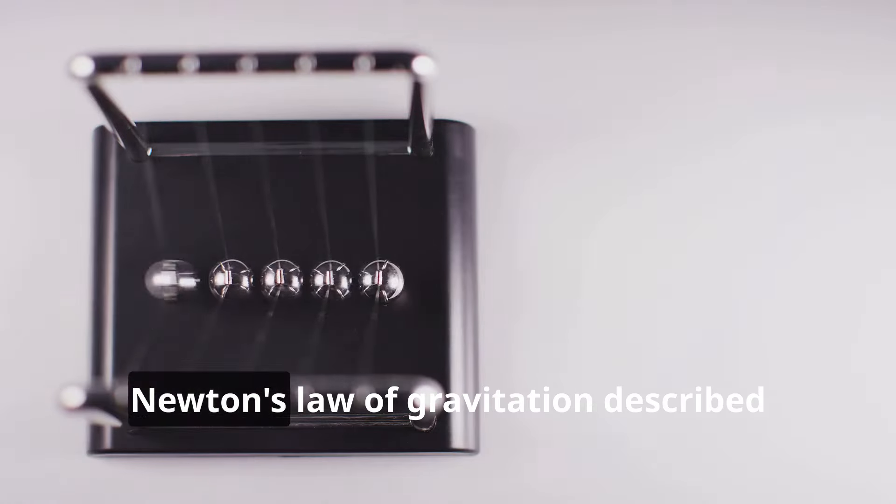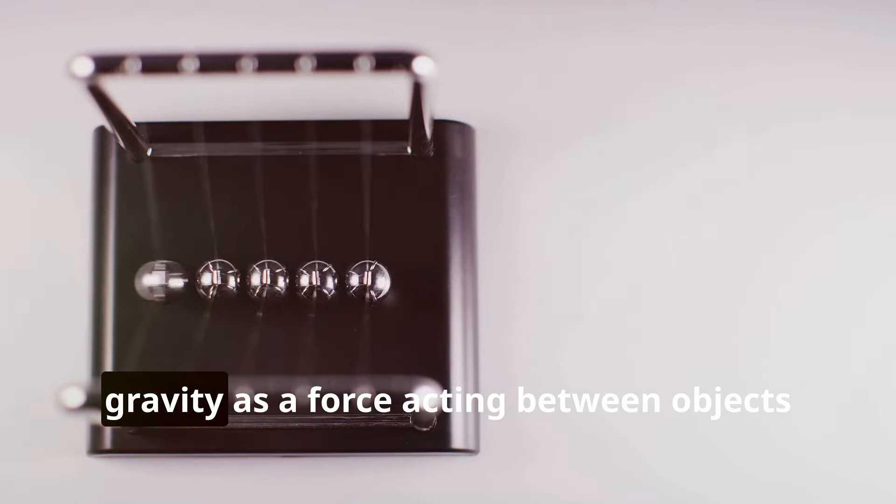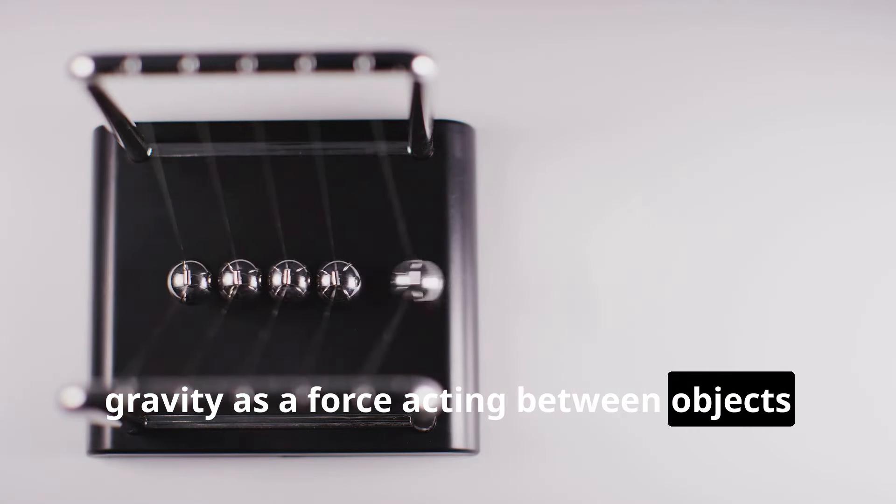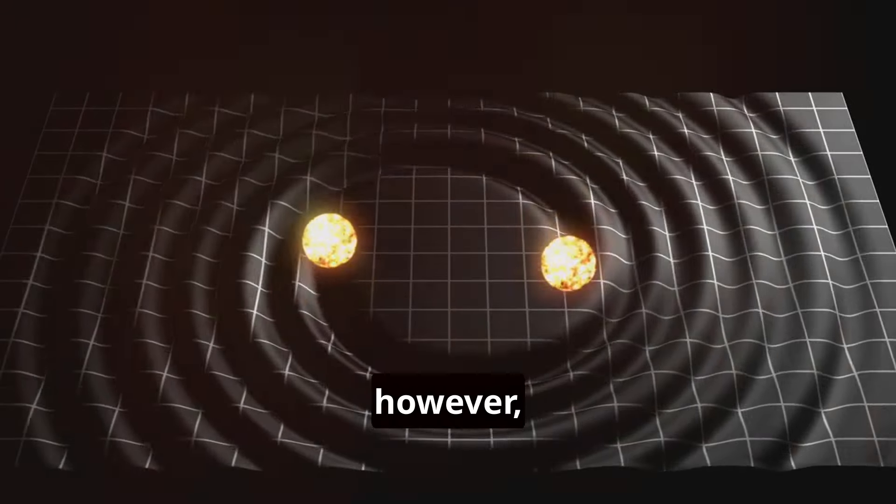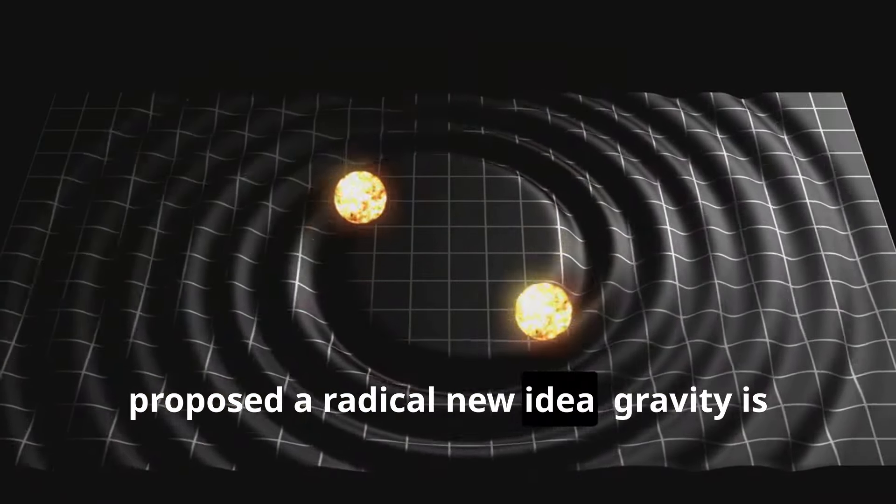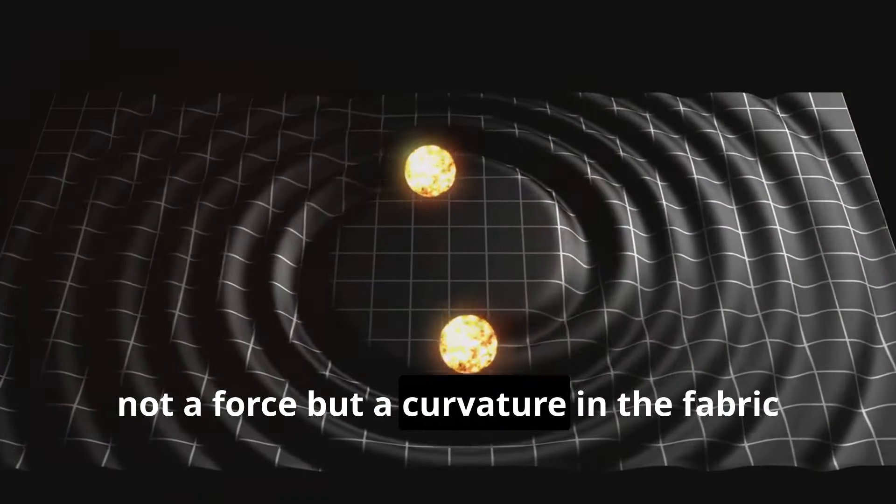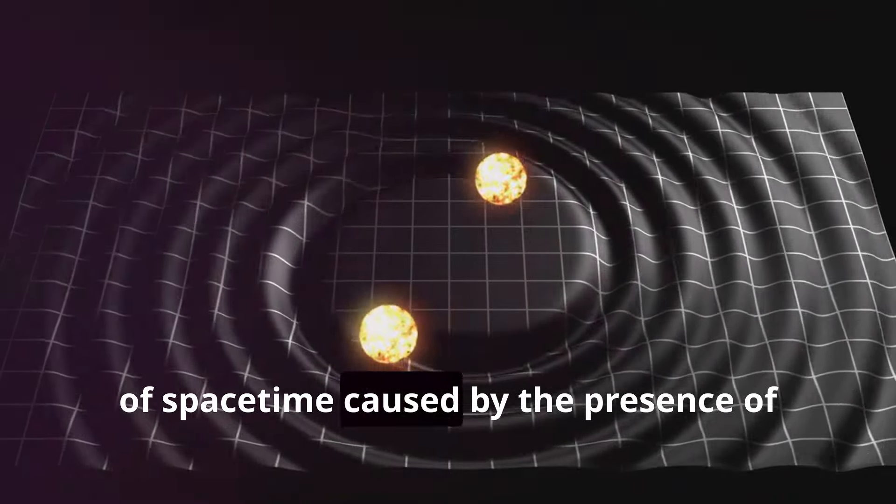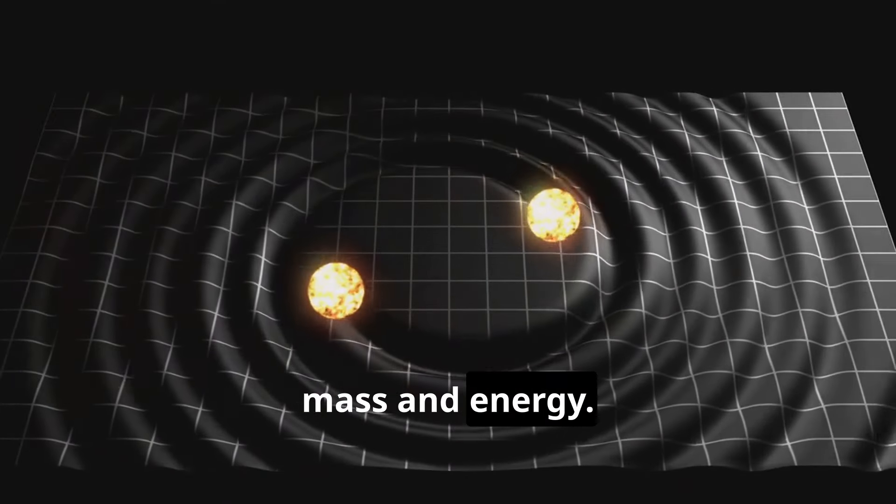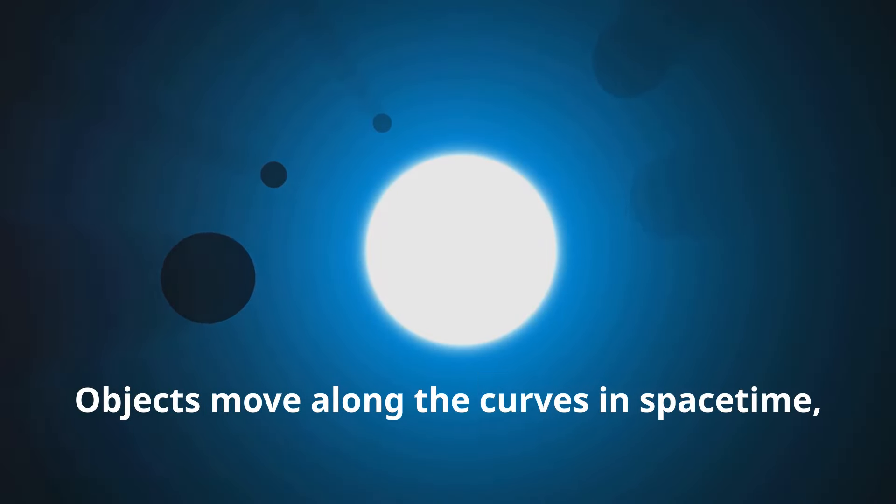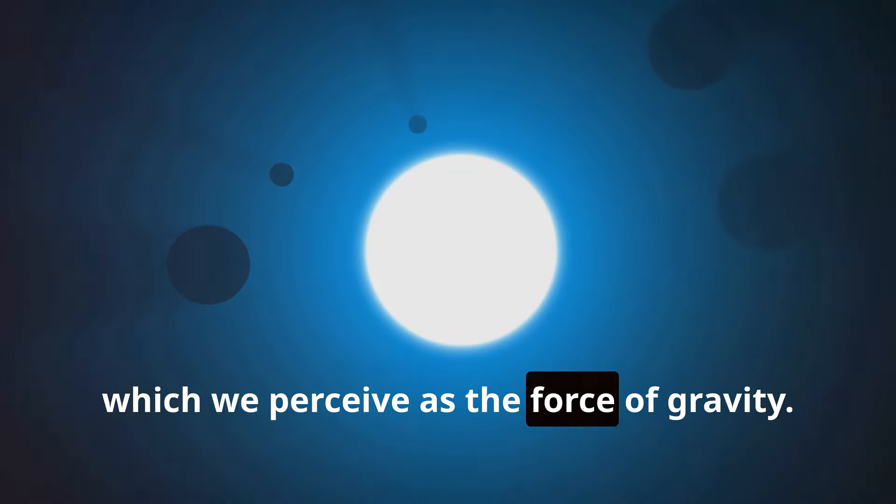Einstein's theory of relativity revolutionized our understanding of gravity. Newton's law of gravitation described gravity as a force acting between objects with mass. Einstein, however, proposed a radical new idea: gravity is not a force, but a curvature in the fabric of space-time caused by the presence of mass and energy. Objects move along the curves in space-time, which we perceive as the force of gravity.